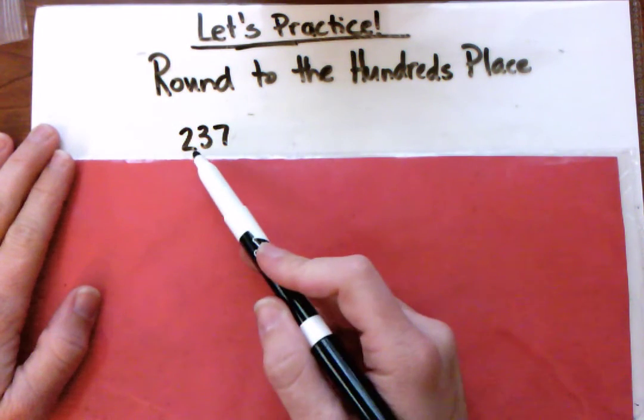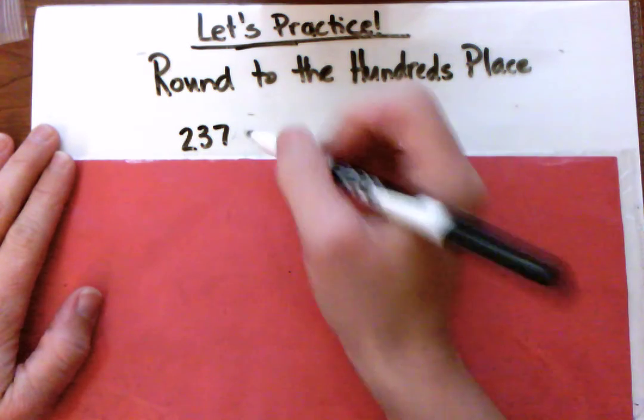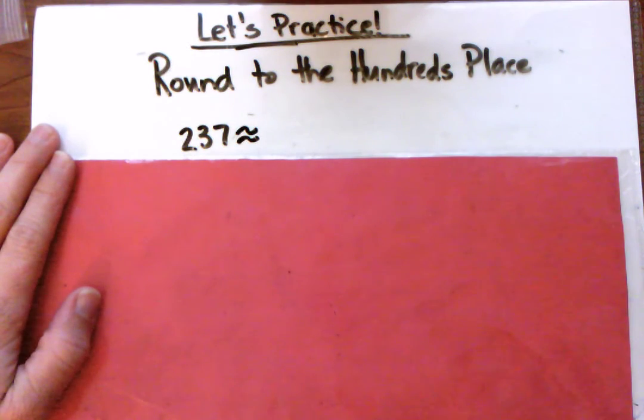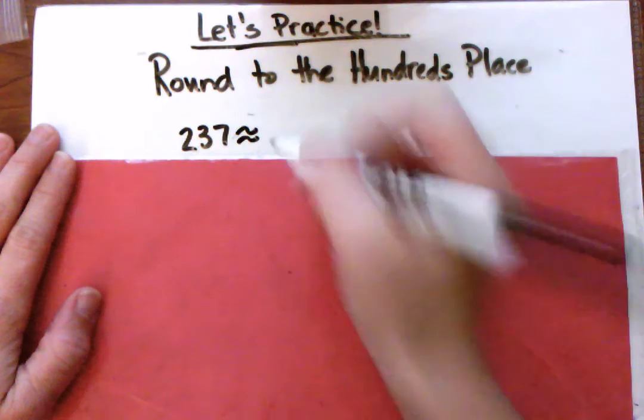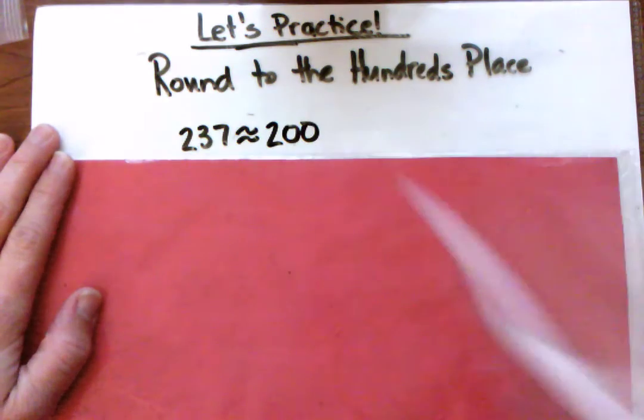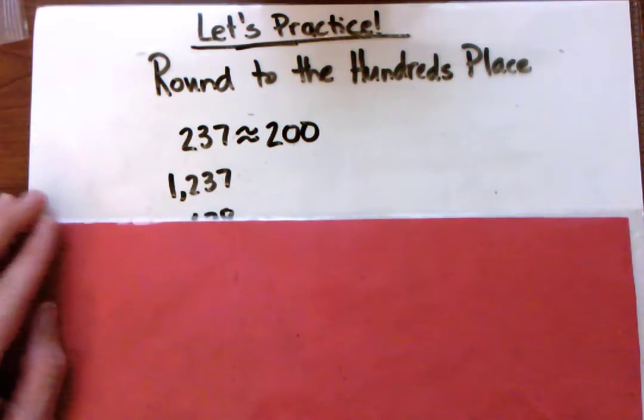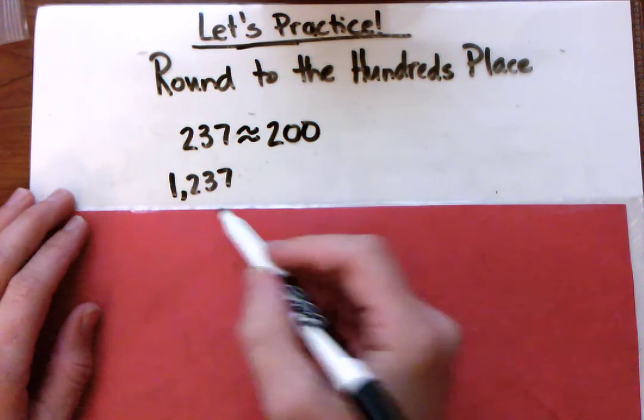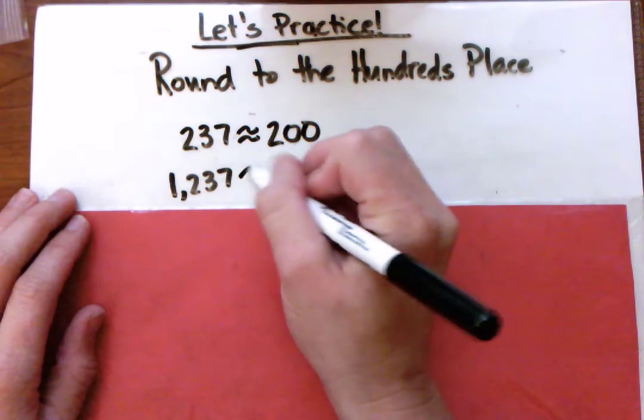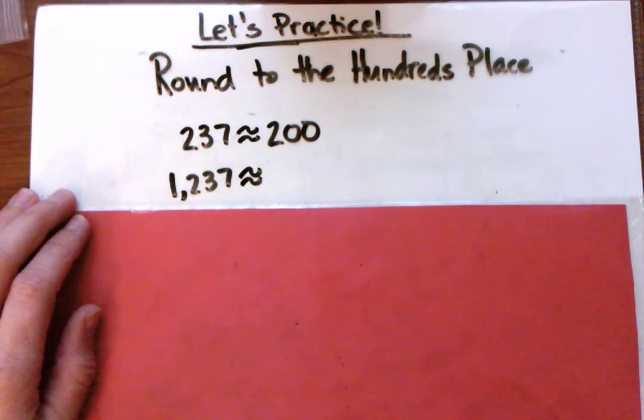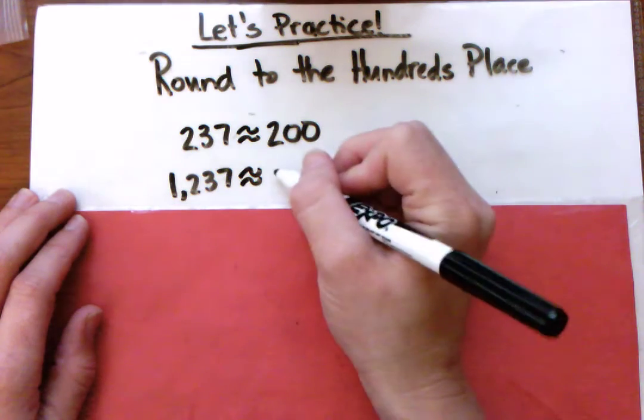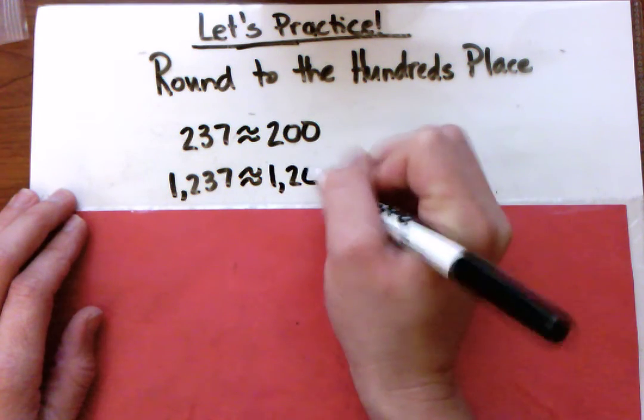Two hundred thirty-seven is closest to what hundred? Two hundred. One thousand two hundred thirty-seven rounded to the hundreds place is one thousand two hundred.